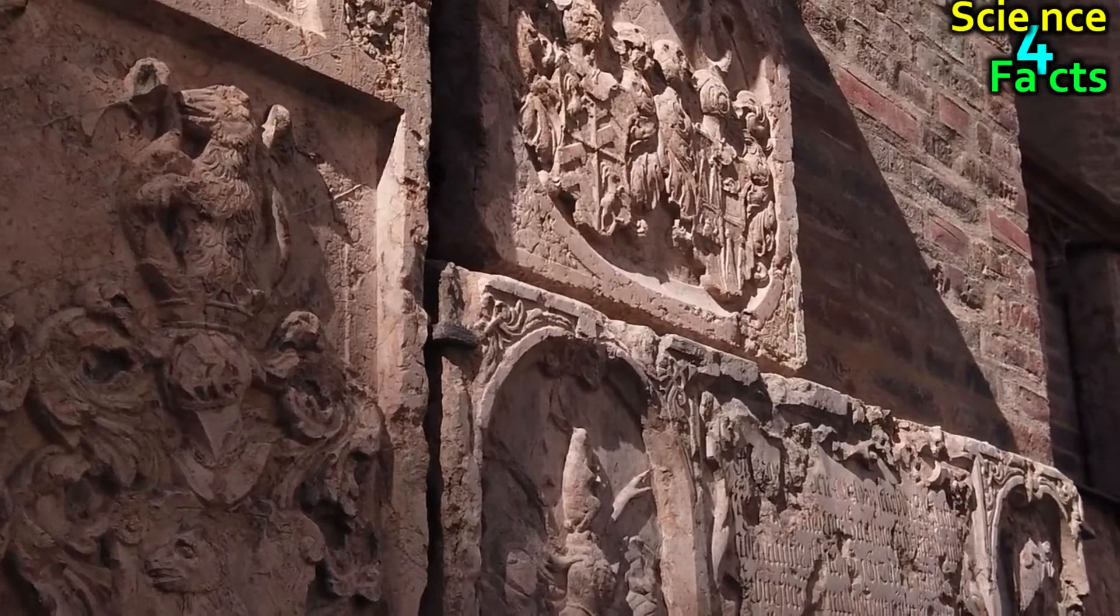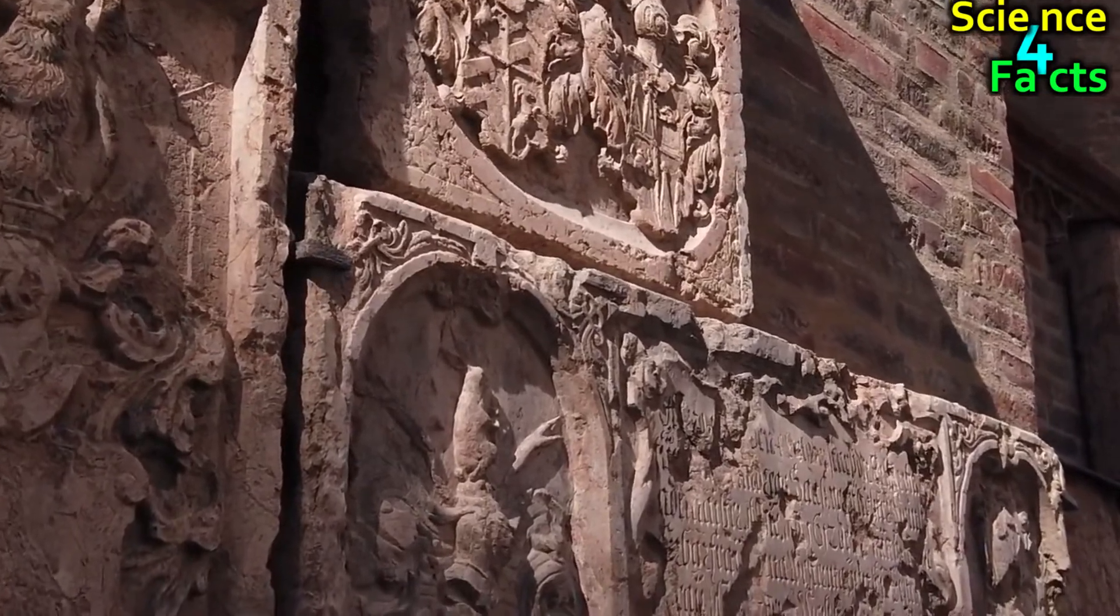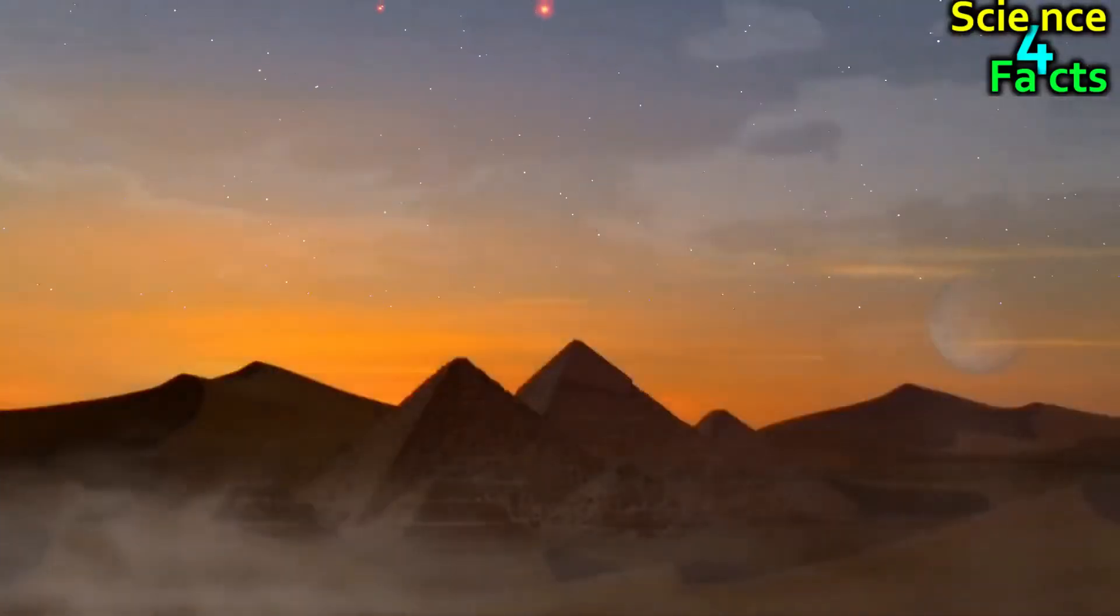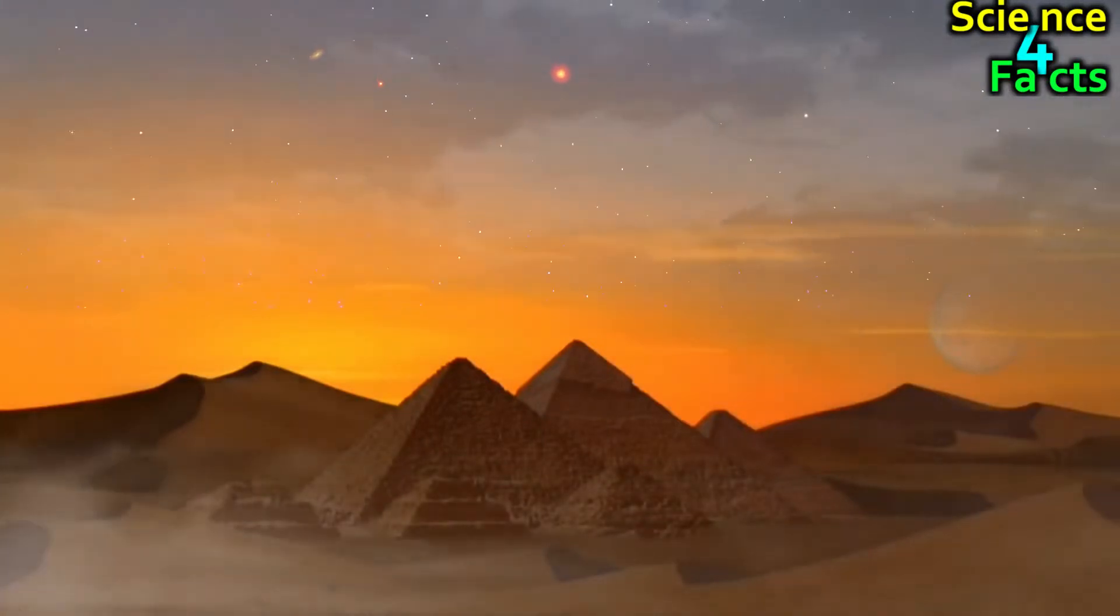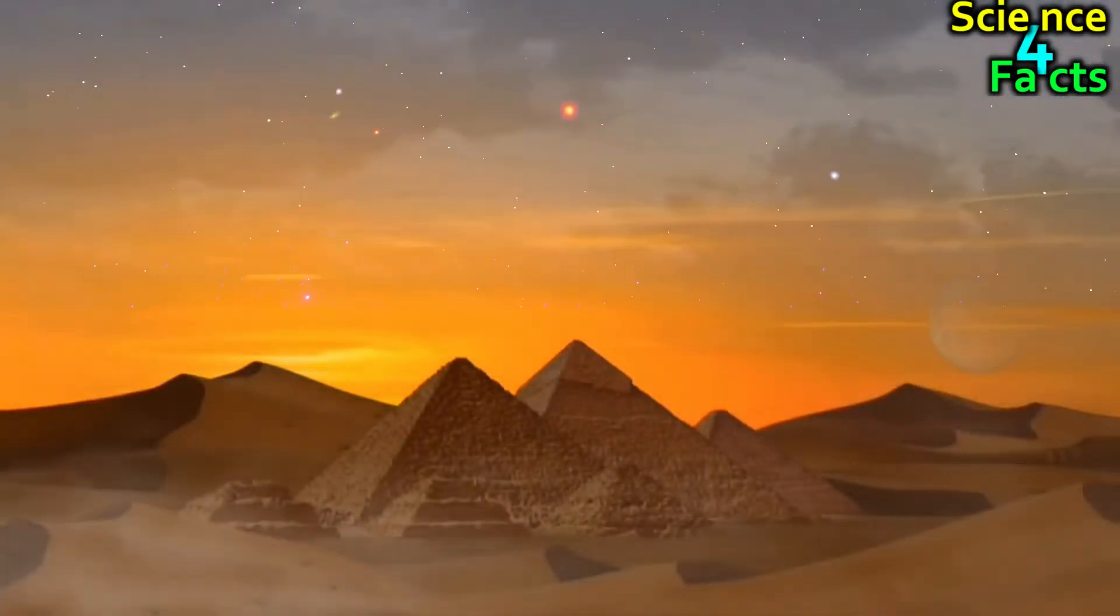In ancient times, Venus was often thought to be two different stars, the evening star and the morning star, that is, the ones that first appeared at sunset and sunrise.